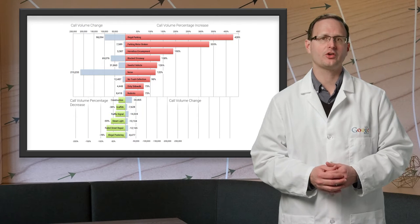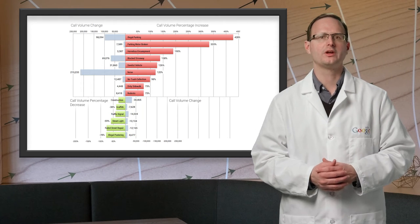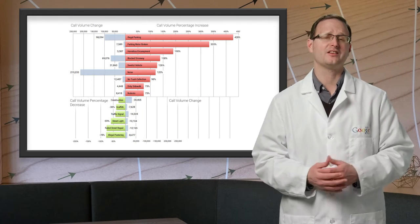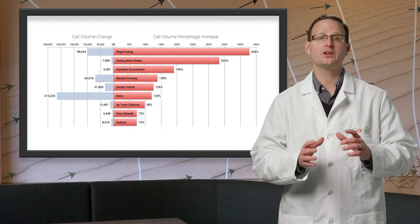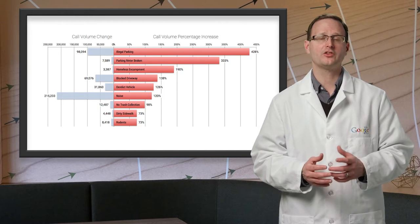Most complaint types have seen an increase, but they're not consistently distributed, and many categories have actually seen a decrease. The most significant complaint increases are related to cars, noise, and garbage.